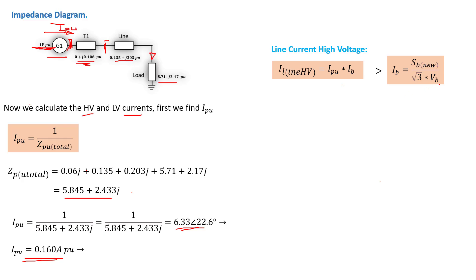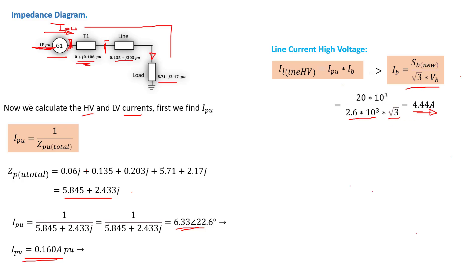I_base equals S_B new divided by the square root of three times V_B, where V_B is the voltage of the generator. Replacing values: S_B is 20 × 10³ VA, V_B is 2.6 kV with the square root of three. That gives us I_base. The line current from the generator is then 0.16 times 4.44, which gives us a current of 0.71 amp.